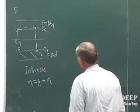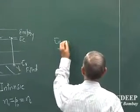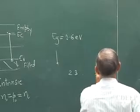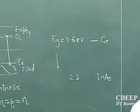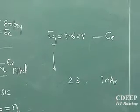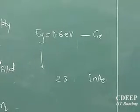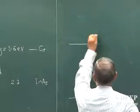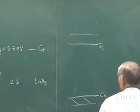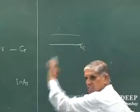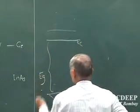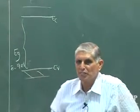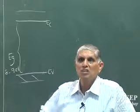The bandgap for normal semiconductors ranges from about 0.6 eV for germanium to as high as 2.3 eV for gallium arsenide. Some materials have bandgaps of 3.4 eV or more. However, there are materials where the bandgap is around 8 to 9 electron volts.